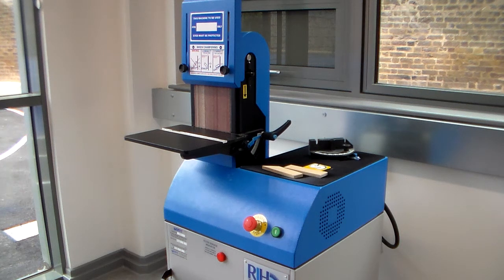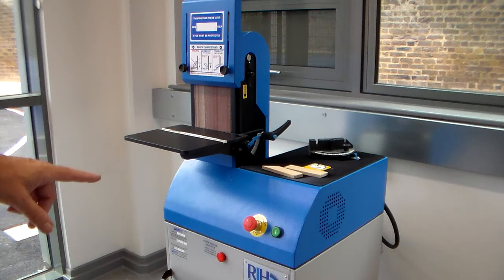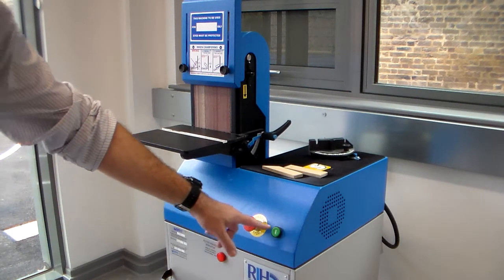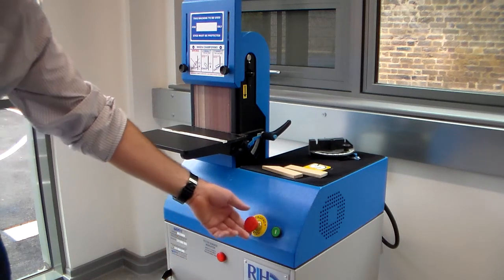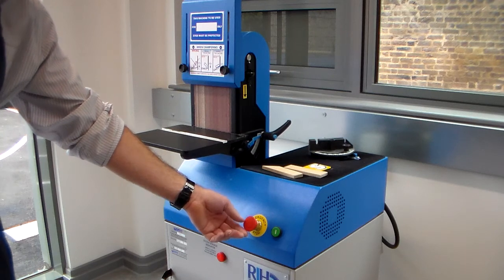We're having a look now at the band facer. We've got an on switch here, an off switch there. The off switch also has a lock on it, so we need to twist to release.